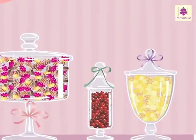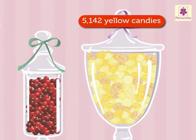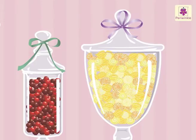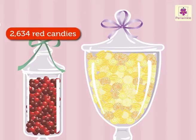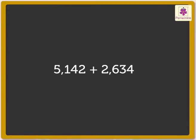Look at the colourful candies. There are 5,142 yellow candies and 2,634 red candies. How many candies are there in all? Here, we have to add both the numbers to find the total number of candies. Let us start.